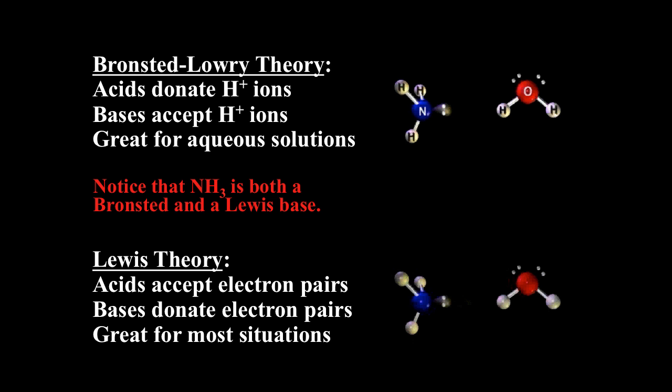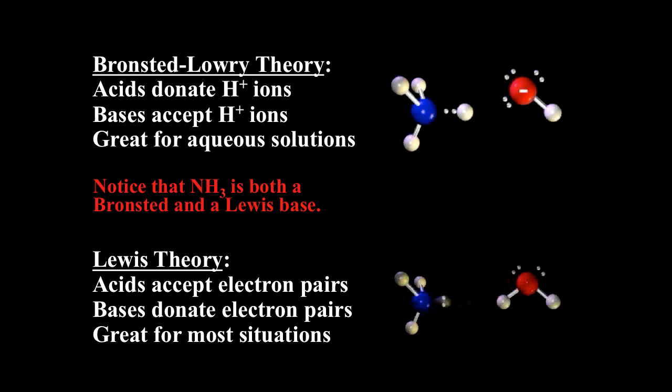We can look at ammonia reacting with water and think about it in terms of Brønsted-Lowry theory. Ammonia is a base in the Brønsted sense because it acts as a proton acceptor — it accepts a proton from a water molecule to form the ammonium ion and hydroxide ion. The water is donating the hydronium ion, making it the acid; the ammonia is accepting it, making it the Brønsted base.